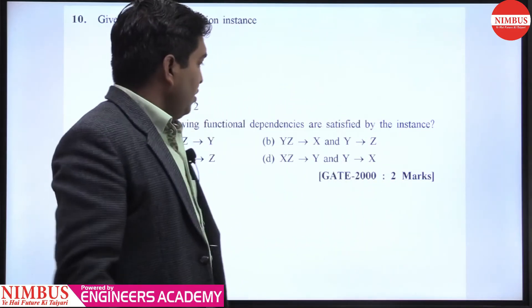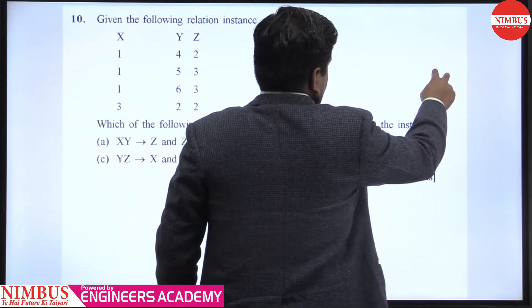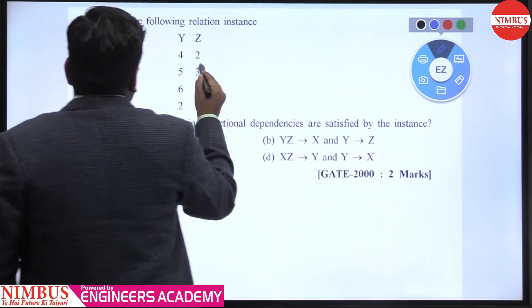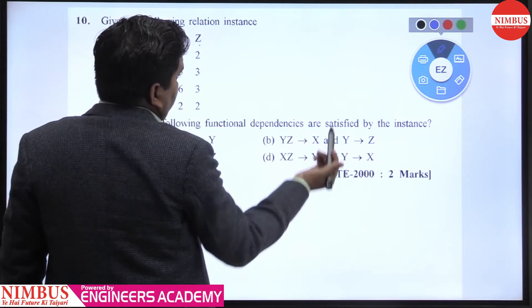Hello students, this question comes in GATE 2000, two marks. What is given? Consider the following relational instance: X, Y, and Z. Which of the following functional dependencies are satisfied by the instance?